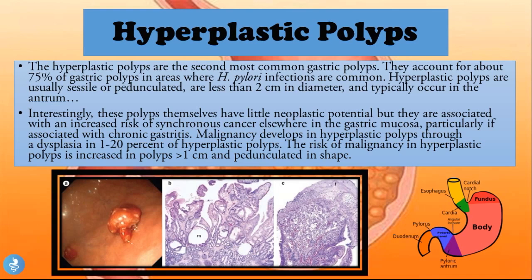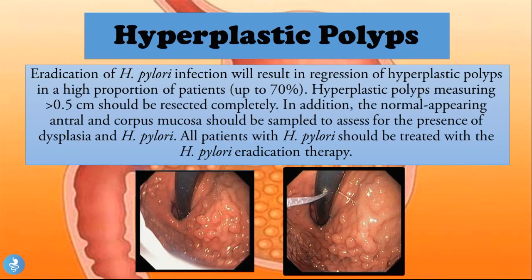Interestingly, hyperplastic polyps themselves have little neoplastic potential, but they are associated with an increased risk of synchronous cancer elsewhere in the gastric mucosa, particularly associated with chronic gastritis. Because H. pylori causes chronic inflammation and infection of the gastric mucosa, that in turn has malignant potential. Malignancy develops through dysplasia in one to twenty percent of hyperplastic polyps, and the risk is increased in polyps more than one centimeter that are pedunculated.